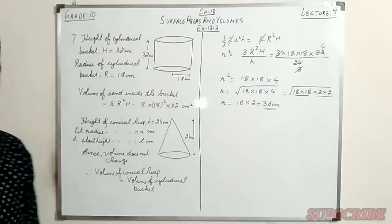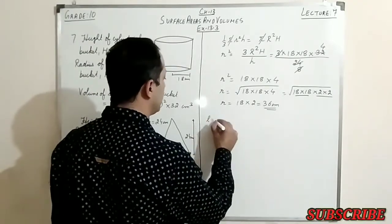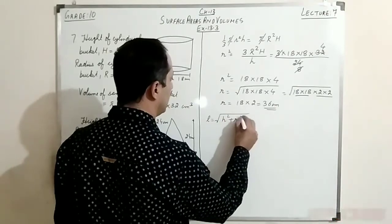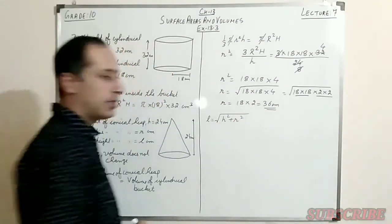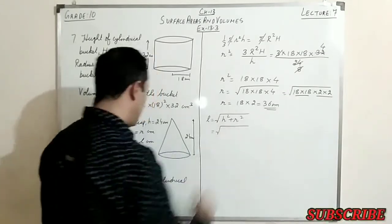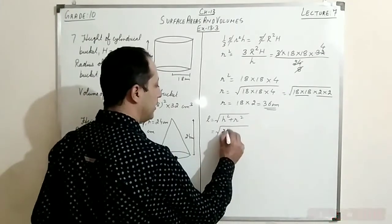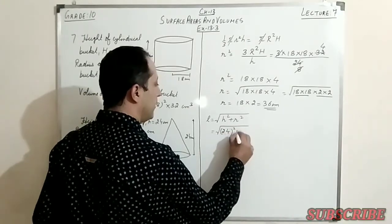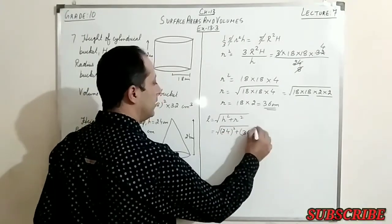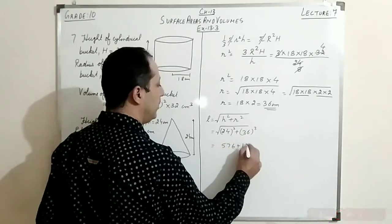Now we need to find the slant height. The formula is l = √(h² + r²). Substituting values: h is 24 cm, so we write 24² + 36². Squaring both: 24² = 576 and 36² = 1296. Adding these gives 1872.